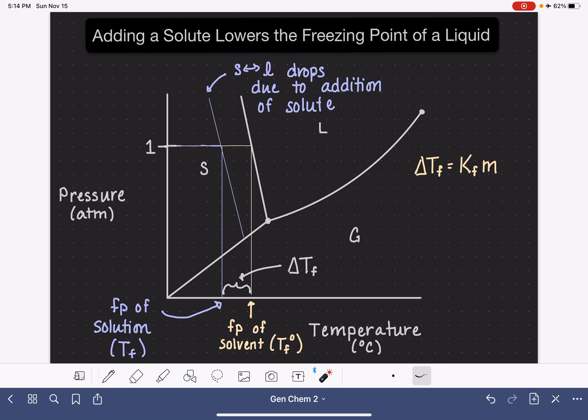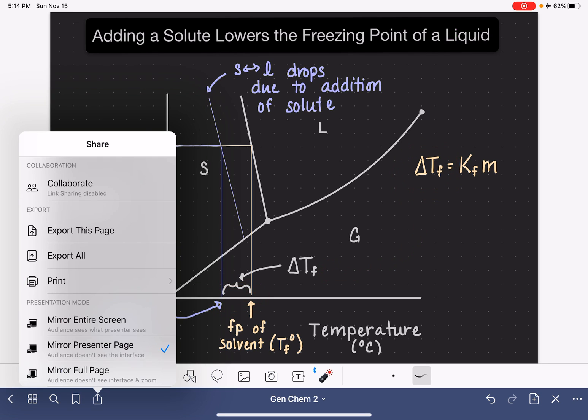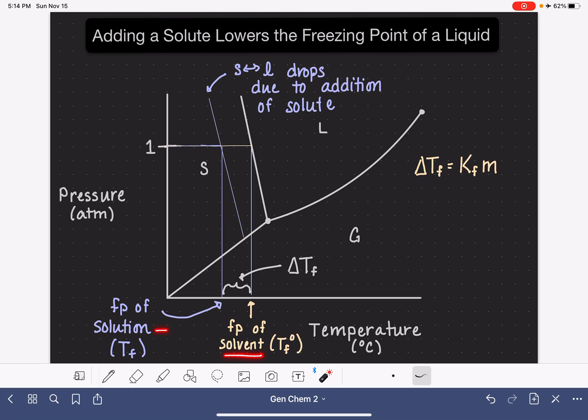So that change in freezing point, which is represented by the difference in the freezing point between the freezing point of the solution and the freezing point of the pure solvent, K_F is a constant. And this is a constant that is specific to the solvent. So you need to look this up in a table. It varies based on your solvent. It is not the same as K_B. It is a different number. And then that little m is molality, not molarity, molality of the solution.